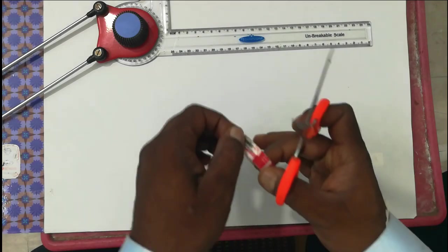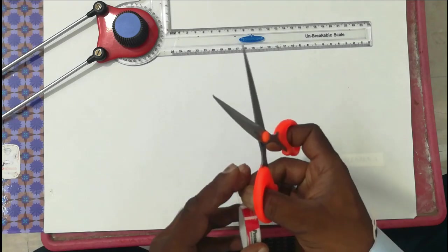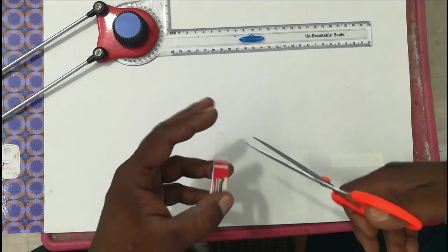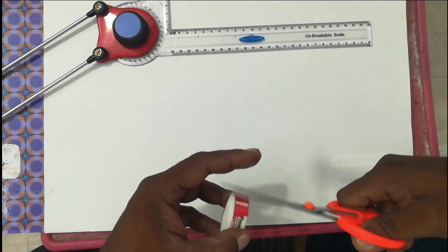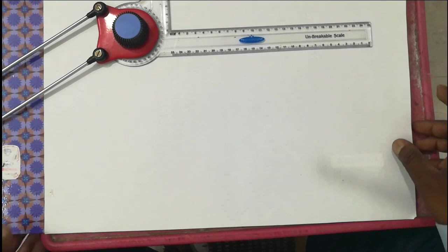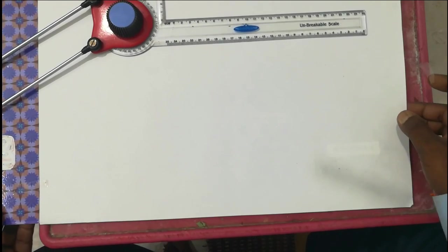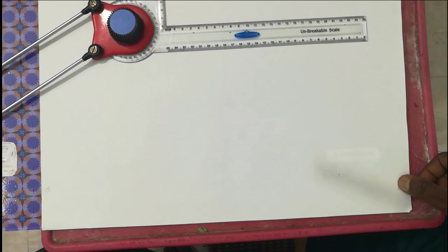You can fix it for fixing the drawing sheet over that office pad or accounts pad. Right side lower part, this is the cello tape fixed.